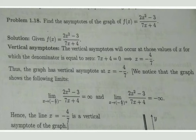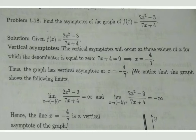We can also notice this from the graph limits. The left-hand limit as x tends to -4/7 of (2x² - 3)/(7x + 4) gives infinity, and the right-hand limit gives minus infinity. Hence the line x = -4/7 is a vertical asymptote of the given function.